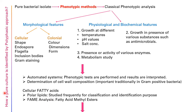Now, how is a pure culture identified by the polyphasic approach? Here is a flowchart. Suppose you have a culture which is new and you need to identify it. You start with a pure bacterial isolate, then you perform phenotypic methods — that is classical phenotypic analysis.